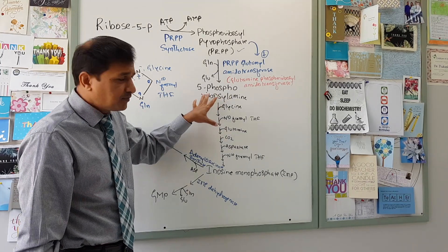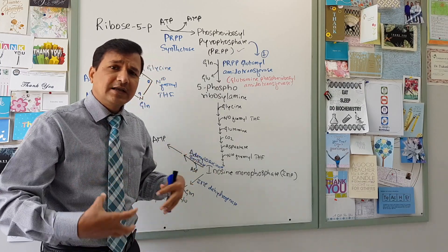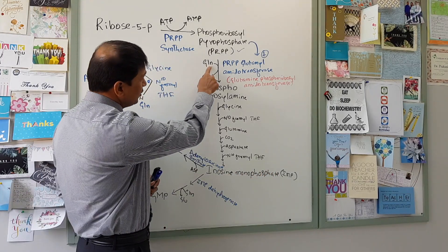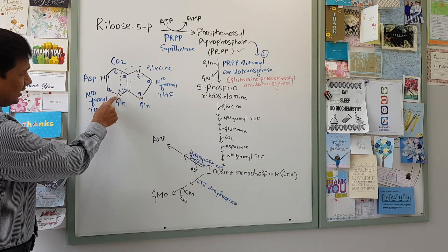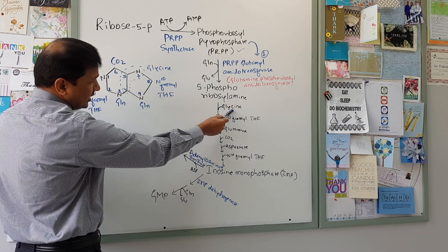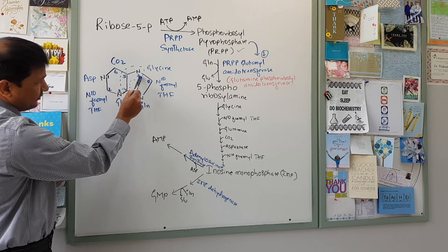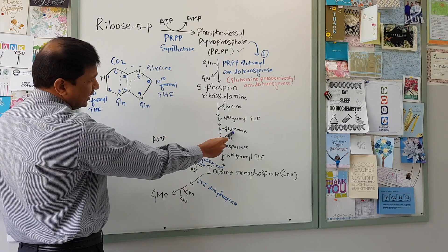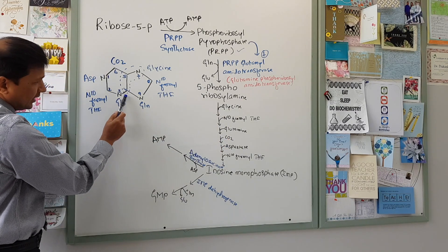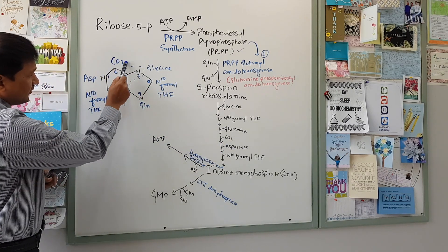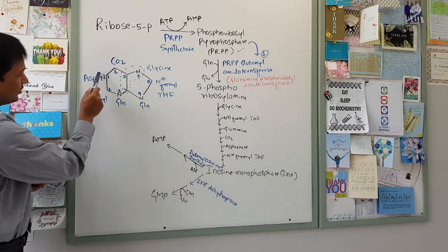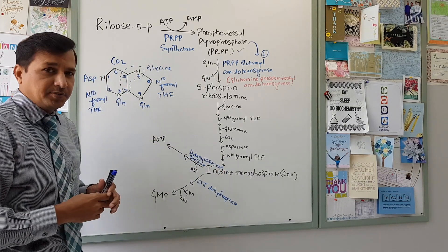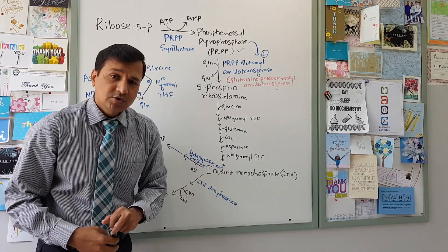Once you get 5-phosphoribosylamine, individual metabolic intermediates donate their atoms sequentially to eventually make inosine monophosphate. Glutamine gives N3. Glycine gets into the reaction and gives C4, C5, and N7. Then N10-formyl-tetrahydrofolate gives C8. Glutamine enters again to give N3. Carbon dioxide gives C6. Aspartate gives N1. Finally, N10-formyl-tetrahydrofolate gives C2. At the end, ring closure occurs and that yields inosine monophosphate.